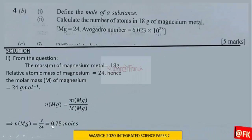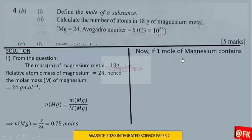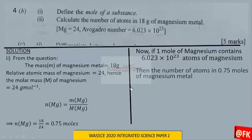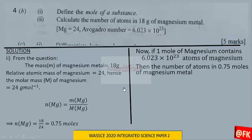This simplifies to 0.75 moles. We know that one mole of an atom contains the Avogadro number, that is 6.023 × 10²³. So if one mole of magnesium contains 6.023 × 10²³ atoms, then how many atoms will 0.75 moles of this metal contain?